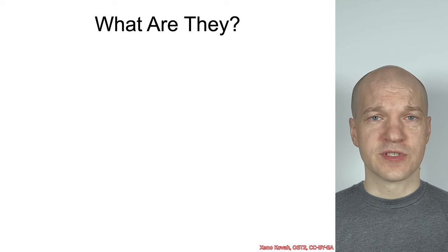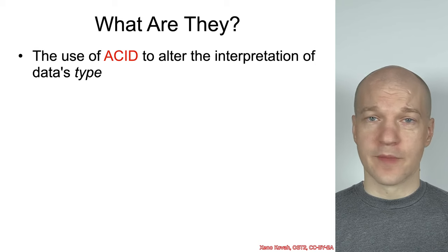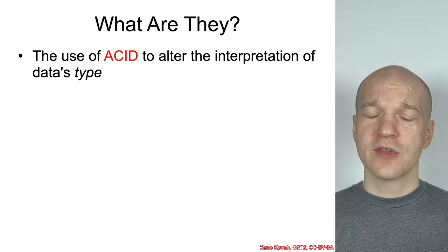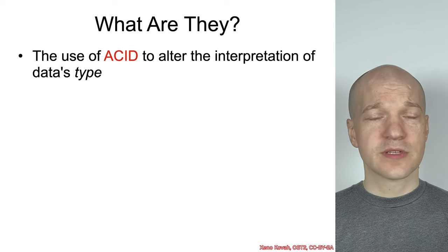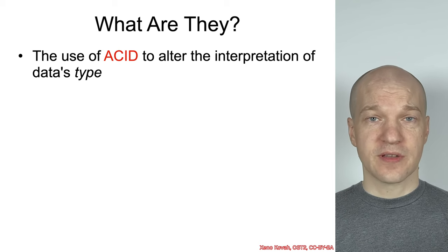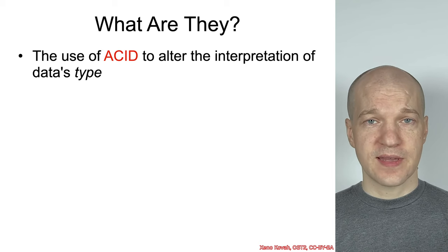And now, type confusions. What are they? They're the use of data to alter the interpretation of a data's type.